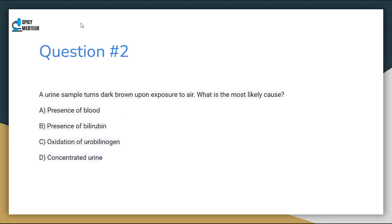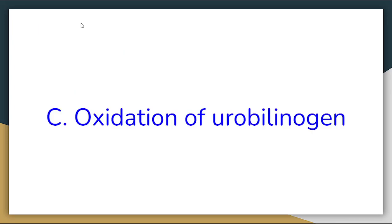Number 2. A urine sample turns dark brown upon exposure to air. What is the most likely cause? Letter A: Presence of blood. Letter B: Presence of bilirubin. Letter C: Oxidation of urobilinogen. Or letter D: Concentrated urine. The correct answer for number 2 is letter C, Oxidation of urobilinogen.